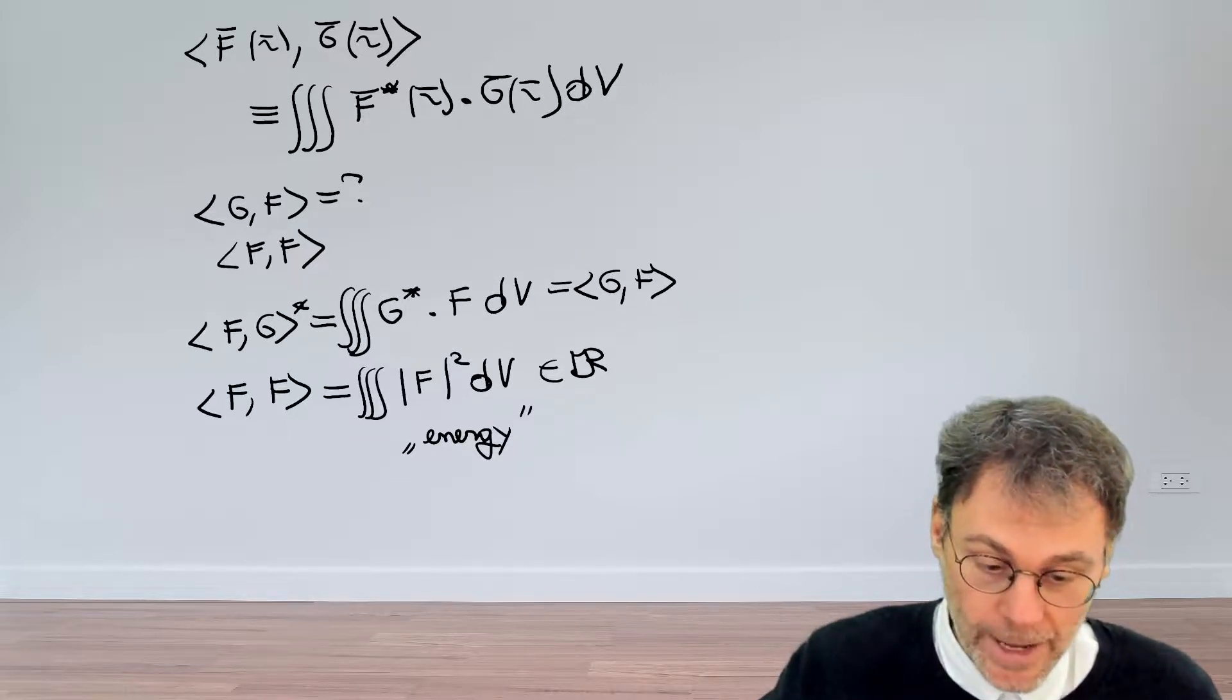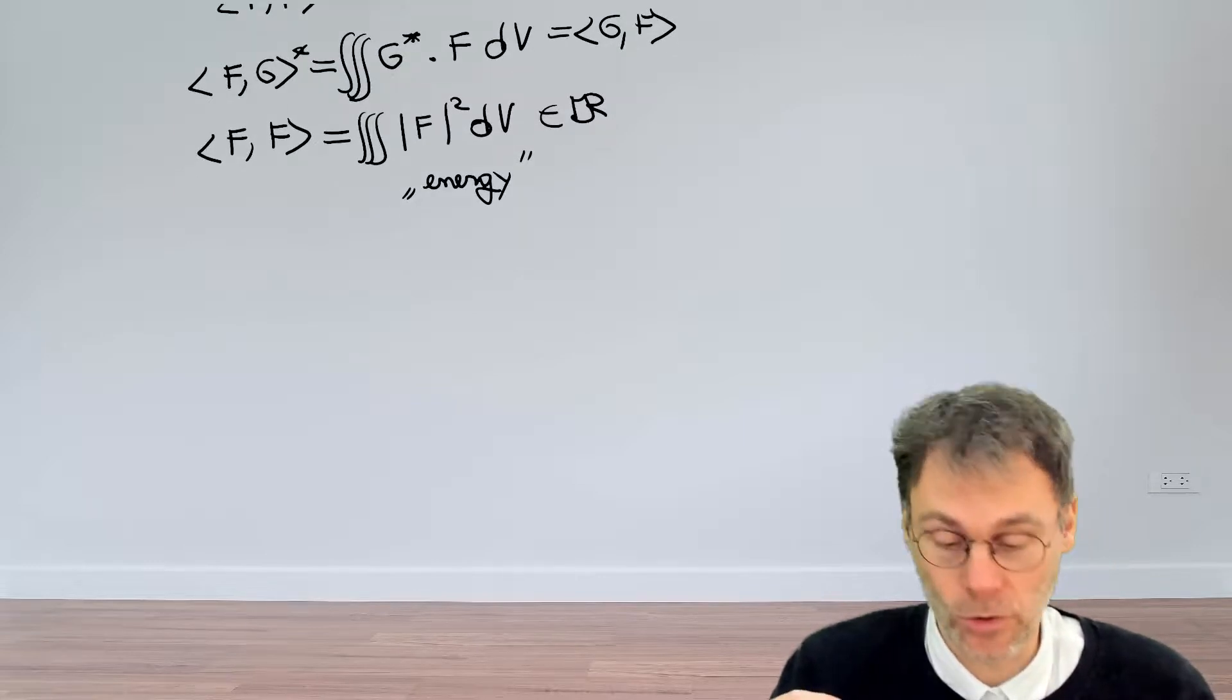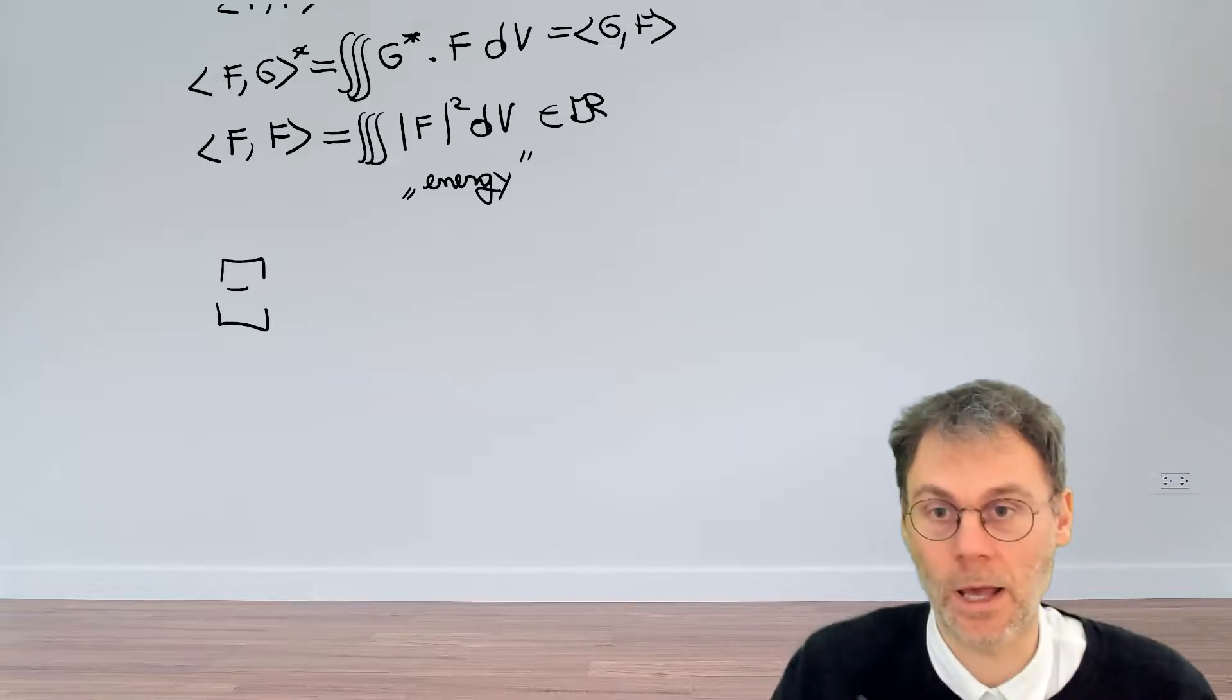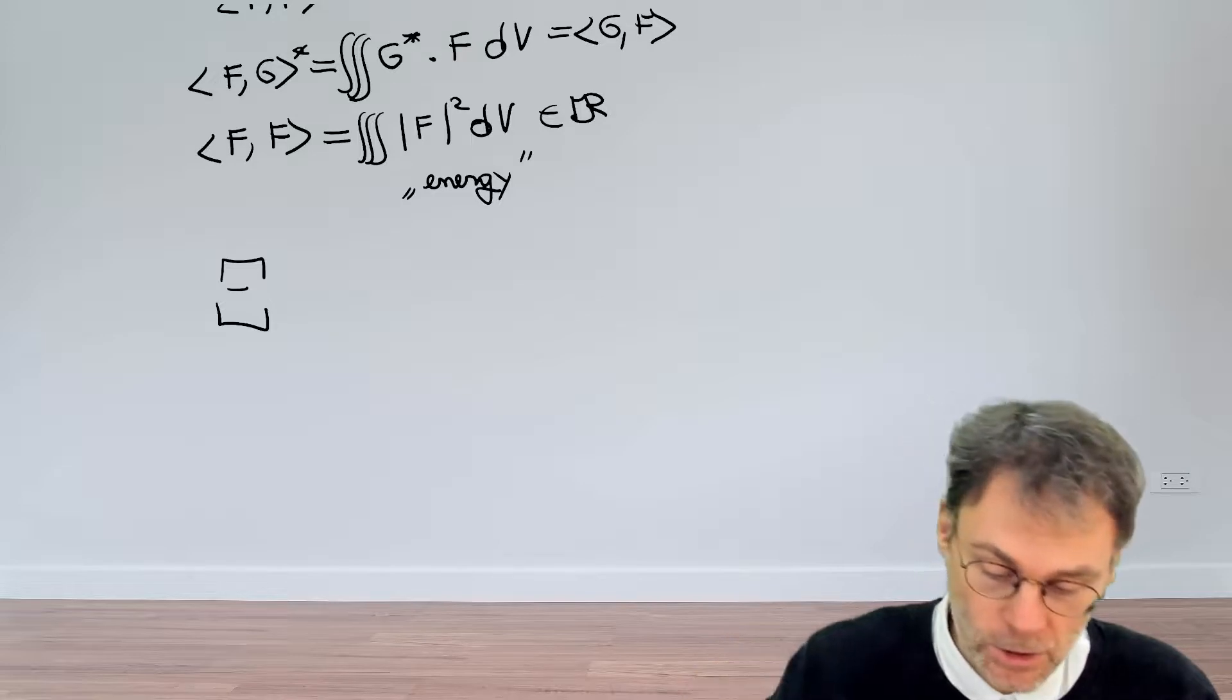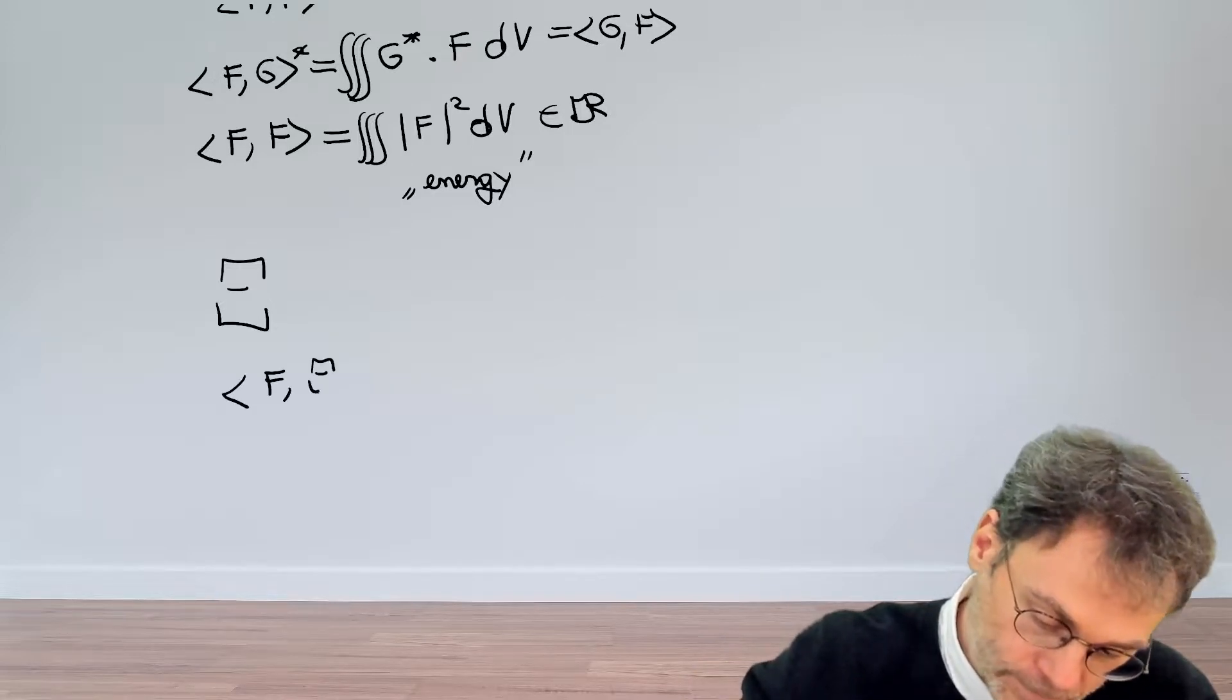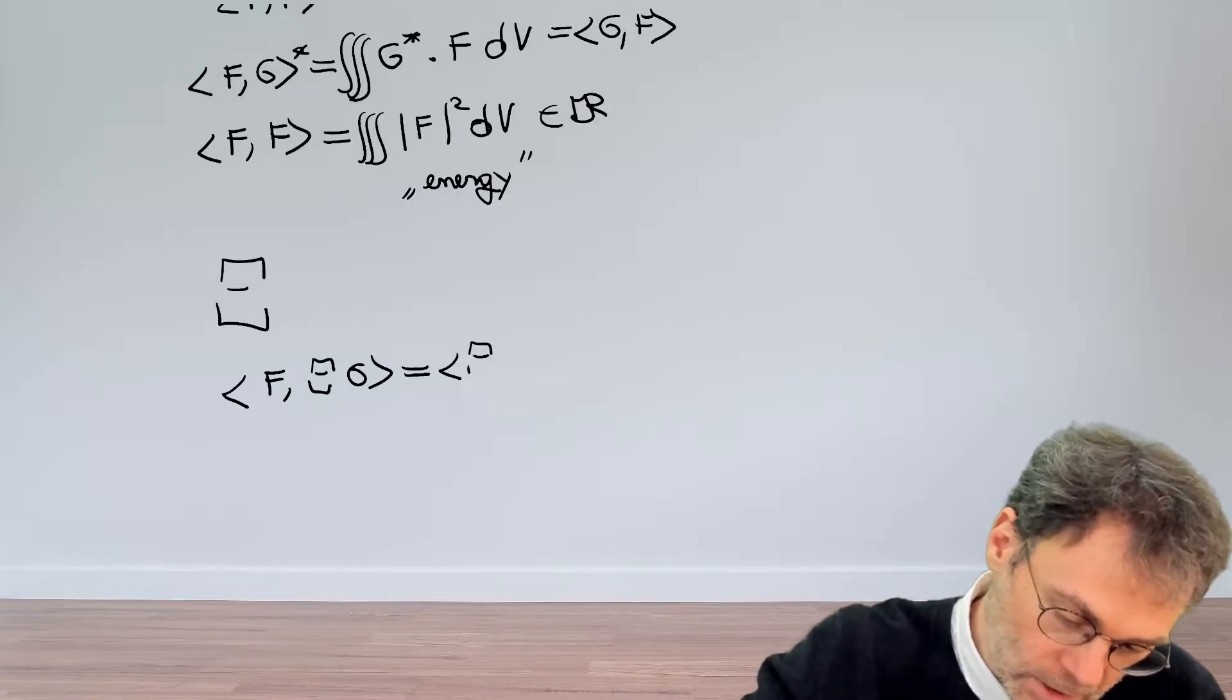So this was just laying the groundwork. Now we can finally define what it means for an operator to be Hermitian. And let's introduce an operator that we call capital Psi here. When is that operator Hermitian? Well, that's true when the following holds. If you have the following scalar product, that should be equal to this scalar product.